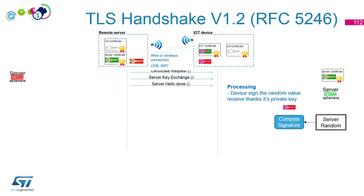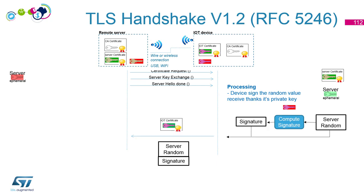Now it's time to answer the server's certificate challenge. The IoT computes the signature of the server random using its private key, and sends the IoT certificate — meaning the IoT device's public key — along with the server random and its signature.